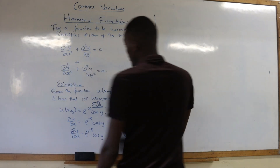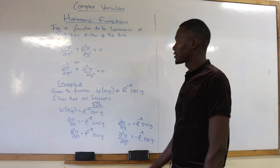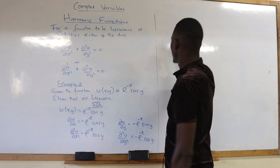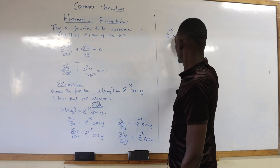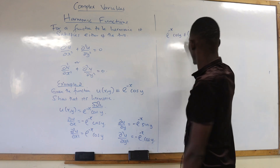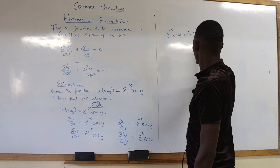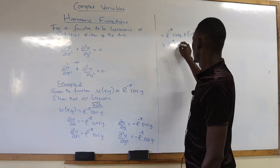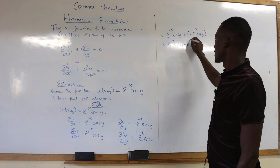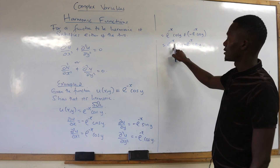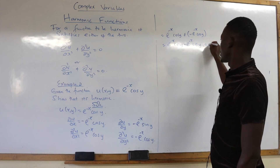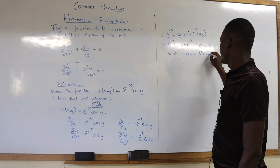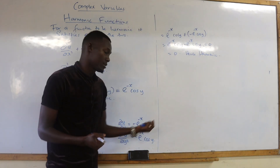Our property says: when you add the second derivative with respect to x and the second derivative with respect to y, the result gives you zero. So: e^(−x) cos(y) plus negative e^(−x) cos(y). These two terms are exactly the same, so the answer is zero. Hence, that function is harmonic.